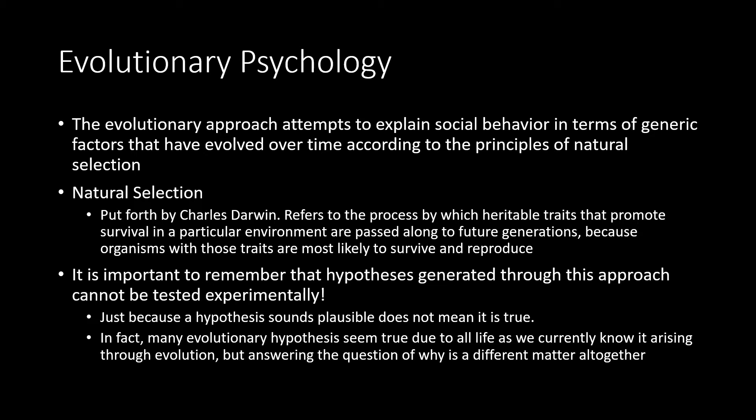Another branch is evolutionary psychology. The evolutionary approach attempts to explain social behavior in terms of genetic factors that have evolved over time according to the principles of natural selection. Natural selection, the concept put forth by Charles Darwin, refers to the process by which heritable traits — things that can be passed on through your genes — that promote survival in a particular environment are passed along to future generations, because organisms with those traits are more likely to survive and reproduce. An important point here is that evolution does not have some type of goal; there is not some end point that natural selection is trying to get to. Rather, certain things survive better and pass on more genes, and it is a never-ending dance.